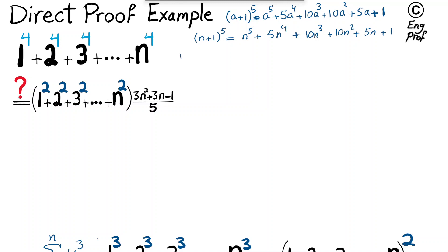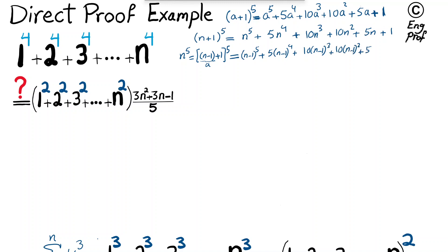Now let's play this game: n to the power 5 can be written as n minus 1 plus 1 to the power 5. So I can use the binomial expansion again, where my a is now n minus 1. This gives n minus 1 to the power 5 plus 5 times n minus 1 to the power 4 plus 10 times n minus 1 to the power 3 plus 10 times n minus 1 to the power 2 plus 5 times n minus 1 plus 1.